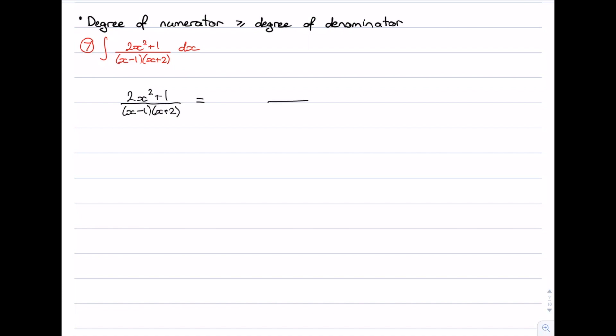Now we already know that we're going to end up with two fractions with denominators x - 1 and x + 2, but we actually have something else that we need to add on to that, and that's going to be a polynomial.